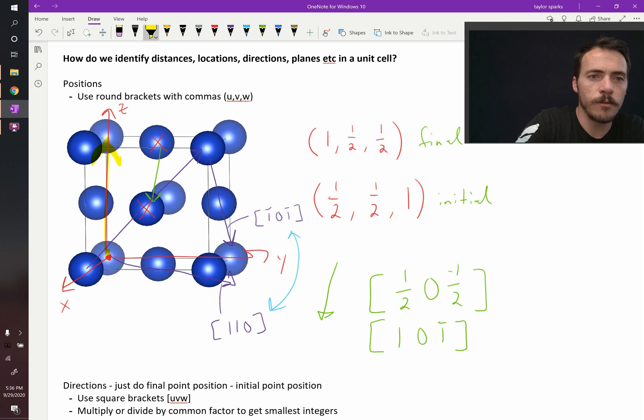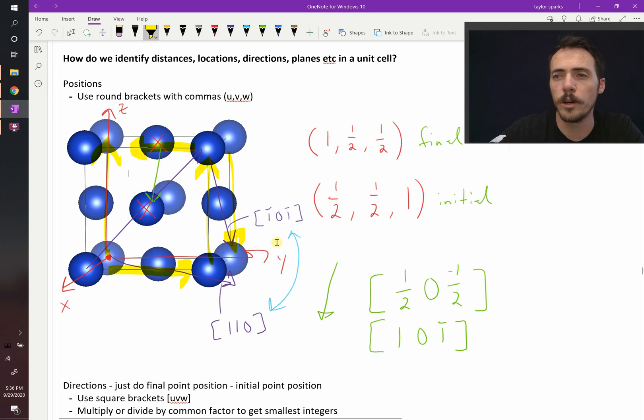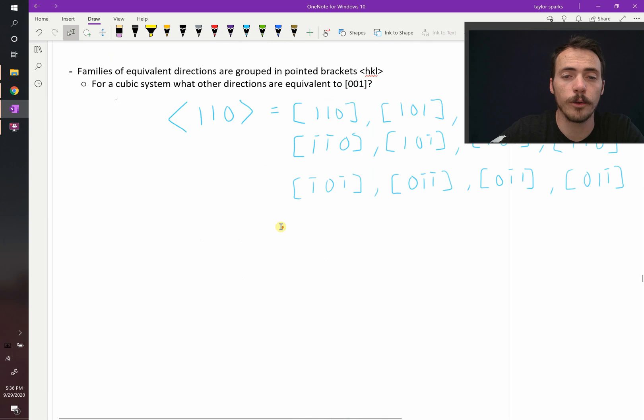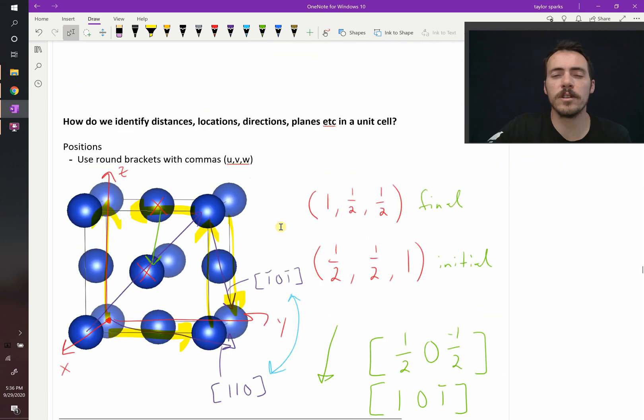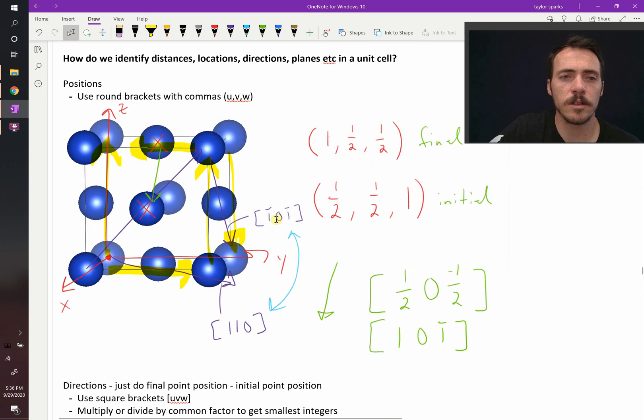So other ones in that same family would be any of these edge lengths. Any of these edge lengths would be in that family. And we could write them all in the same way that we did for the 1, 1, 0 family of directions. So that is how you do points and directions as well as families of directions using Miller indices. This turns out to be pretty valuable.